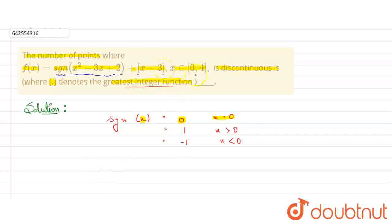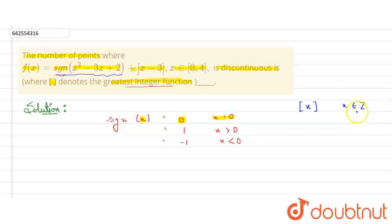Now let me tell you about the greatest integer function. If x belongs to the set of integers, this function will be discontinuous at all x belonging to the set of integers. The limit given in the question is 0 to 4, so it will be discontinuous at all integer points within that range.